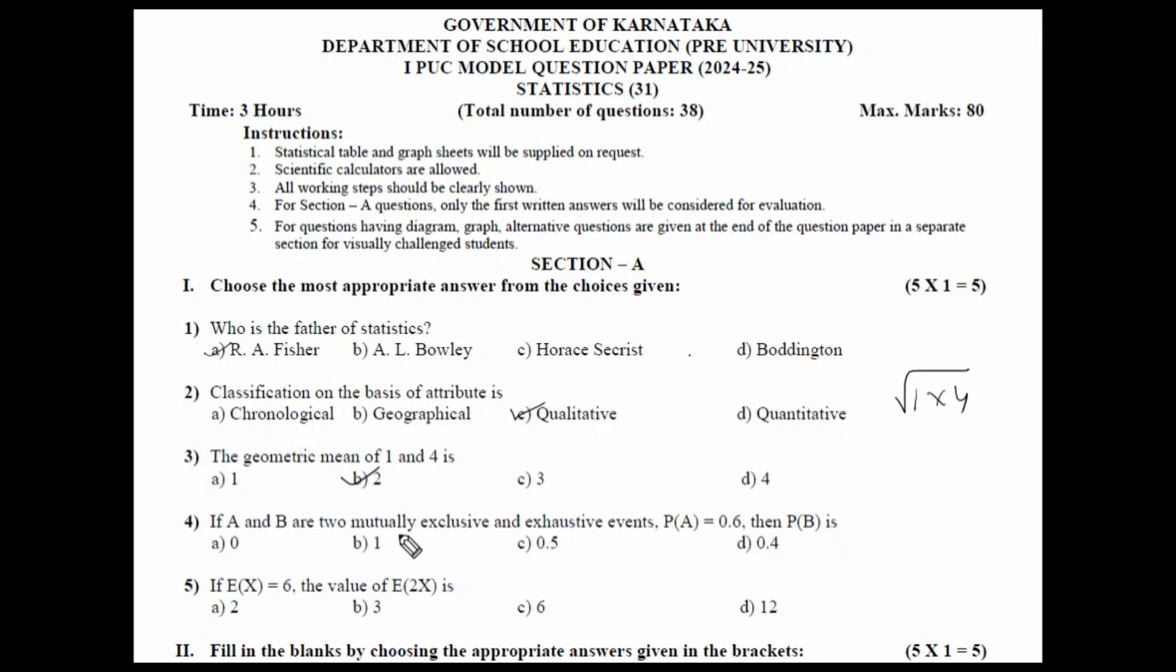If A and B are two mutually exclusive and exhaustive events and probability of A is 0.6, then probability of B is equal to - so your probability of A union B will be is equal to 1 here. So, 1 is equal to 0.6 plus probability of B, so if you take 0.6 this side, this will be 1 minus 0.6, which is 0.4 and your correct answer is 0.4.